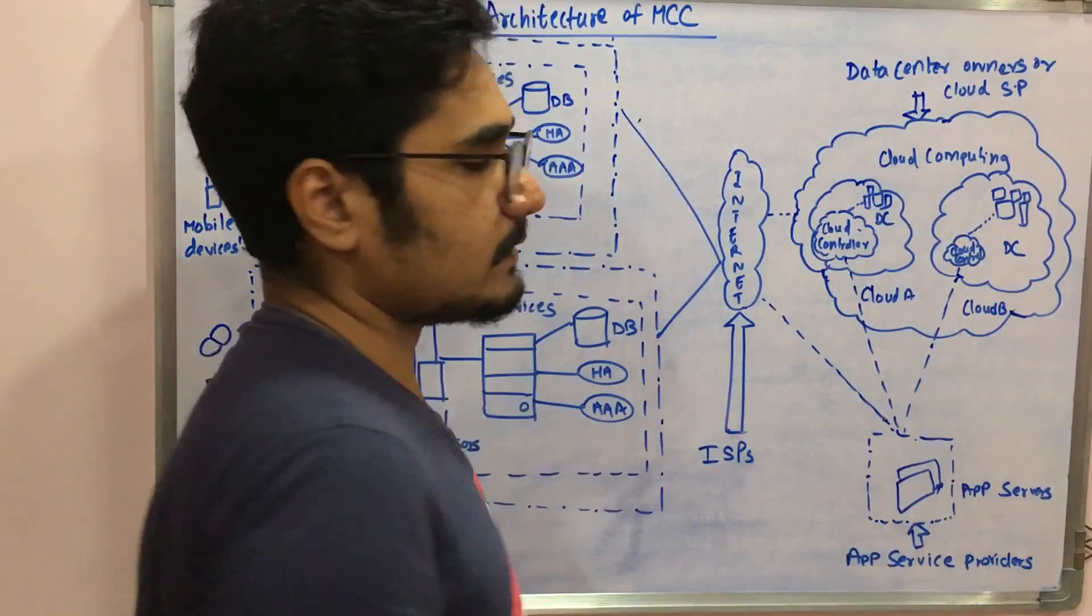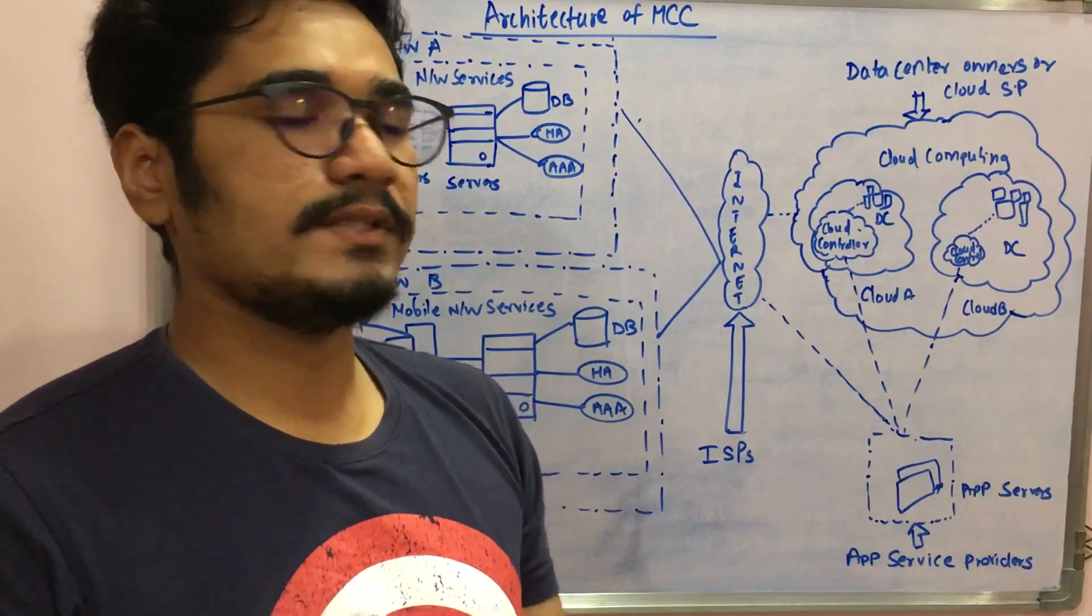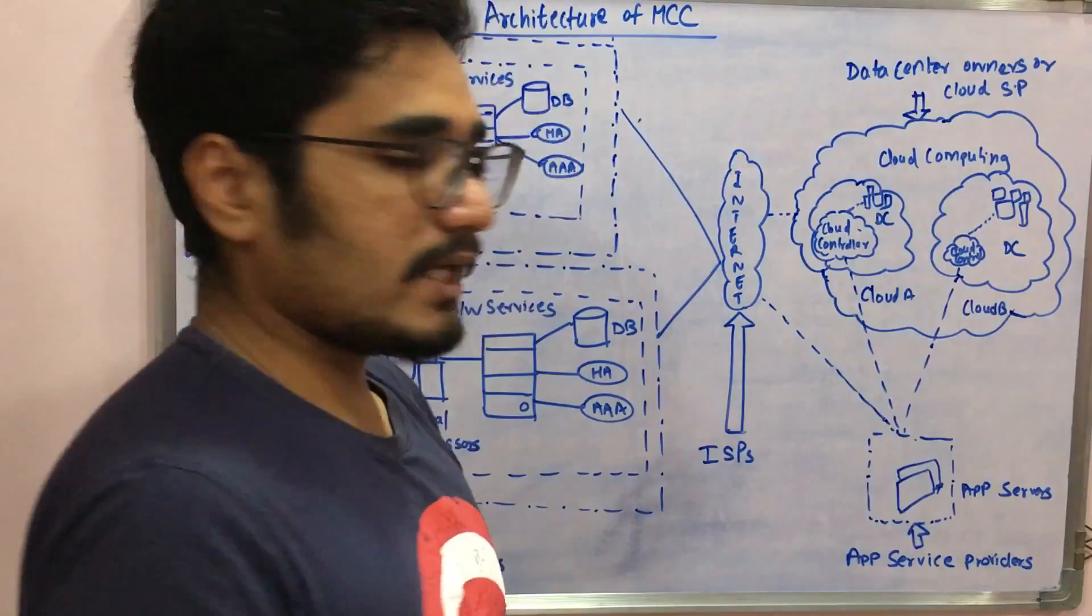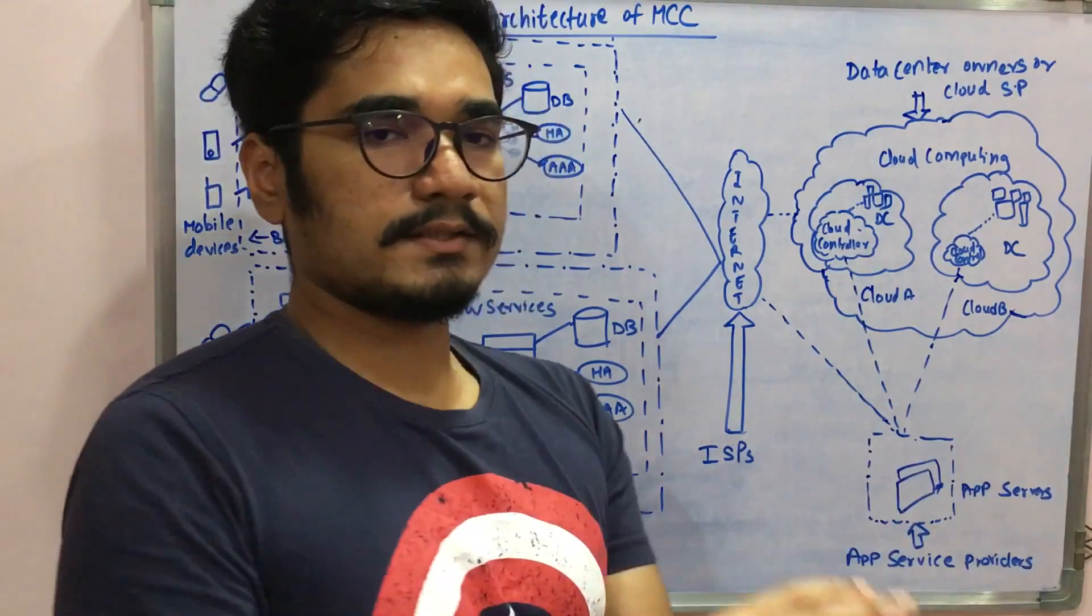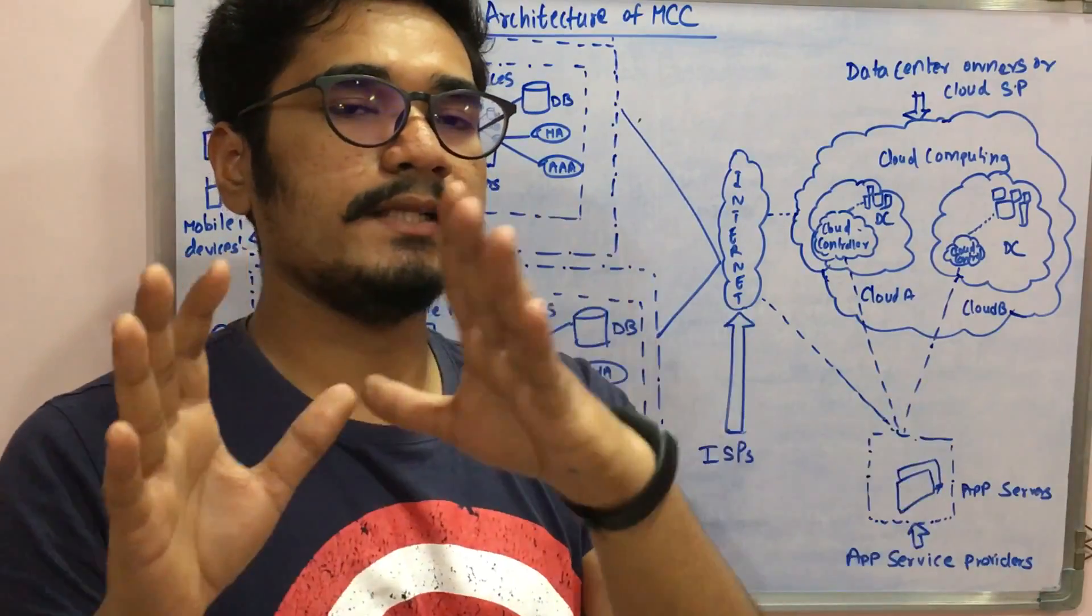Moving down we have the application servers. Application servers are mainly used for displaying the data which is at the application service provider. It's managed by the application service provider. Various terminals would be there where you will get the end result of the requested query - a response would be sent back to the desired mobile user or subscriber.